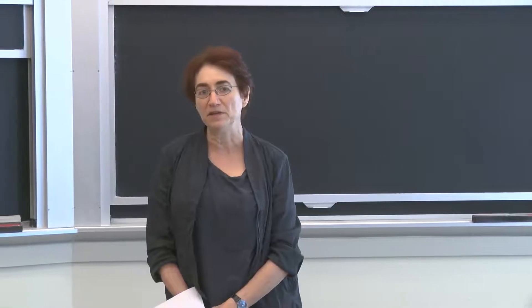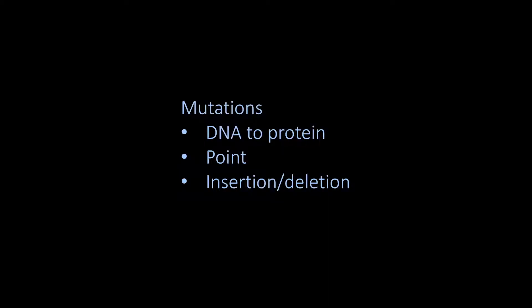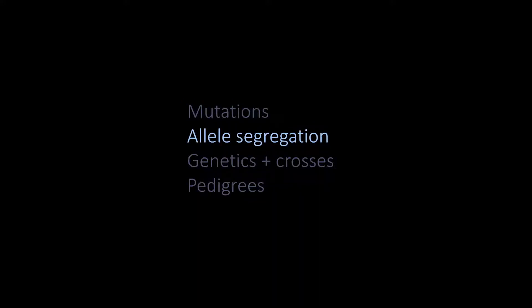At this point after your class exercise, you should be familiar with these three aspects of mutation. You should be able to take a piece of DNA, conceptually turn it into RNA, and conceptually translate it into protein. You should understand what happens to the protein sequence when the DNA is changed by a point mutation or by an insertion or deletion mutation. With that in mind, let us go on to our second topic today, which is called allele segregation.